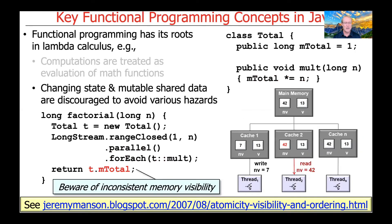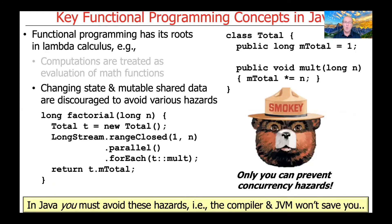There are also subtle problems related to inconsistent memory visibility, which illustrates how complicated it is to program concurrent and parallel code without proper support from abstractions like Java parallel streams, completable futures, or reactive streams. Only you can prevent concurrency hazards — you have to be responsible for ensuring there are no synchronization issues, no race conditions, and no memory visibility problems. The compiler, the Java Virtual Machine, and the execution environment typically won't save you, so you have to be aware of this.